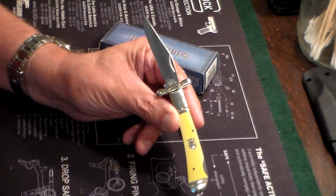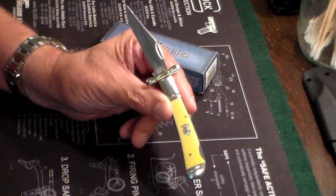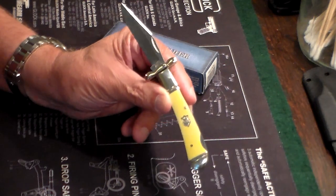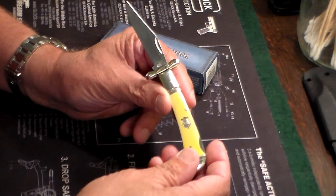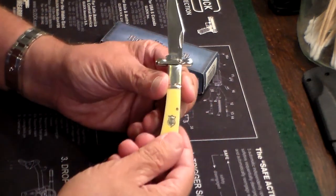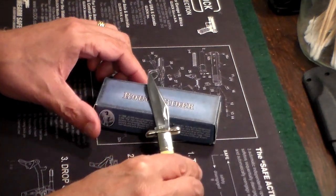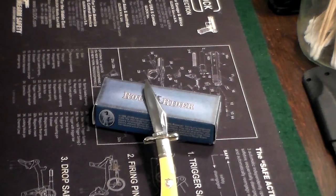Just a quick look at a Rough Rider small swing guard lock back knife. If you're looking for something to carry into New York City or something that could be discreetly carried in your pocket without a pocket clip, I highly recommend it. Just a quick look at a pretty knife, and thanks very much for watching. Have a great day.